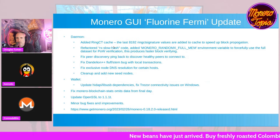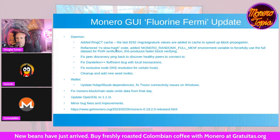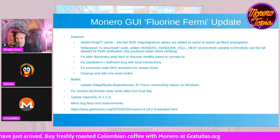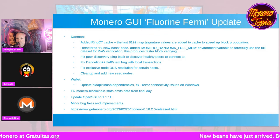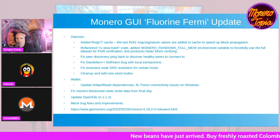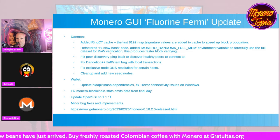They have refactored the RxSlowHash function code and added the Monero RandomX full environment variable to make the GUI forcefully use the full Monero dataset for the proof-of-work verification that produces the block verifying — and of course, faster.